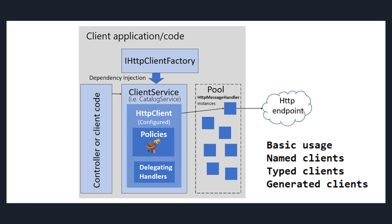You can also add request middlewares to validate your request before calling your Web API, which creates less traffic for your Web APIs. There are different ways to consume your HttpClientFactory, but we'll be concentrating on typed clients in our Blazing Chat application. Let's go ahead and implement HttpClientFactory into our Blazing Chat application.